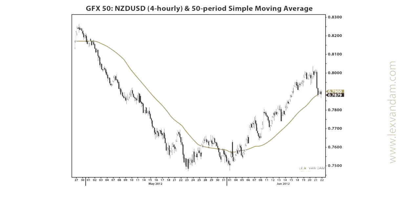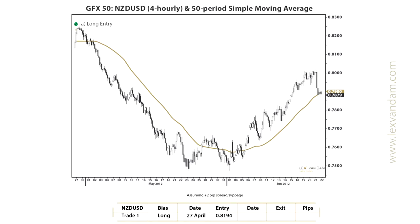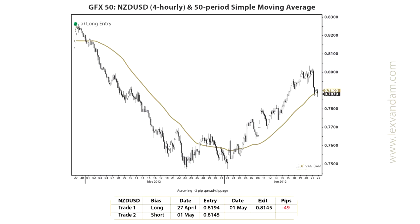Here we can see our first entry. The price crossed and closed above the moving average, giving a long trigger at the open of the following candle at 0.8194. The price went up a bit, but shortly afterwards it did cross and closed below the moving average, so the long trade was exited at the open of the following candle at a loss of 49 pips.